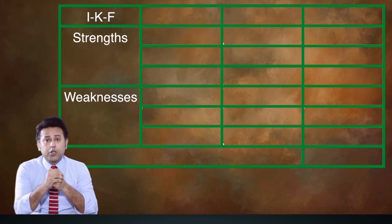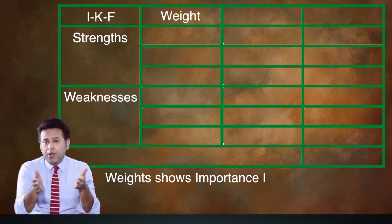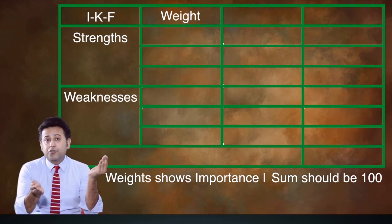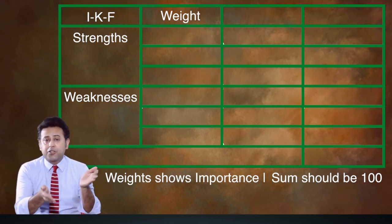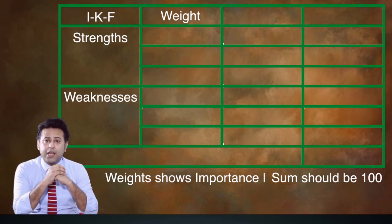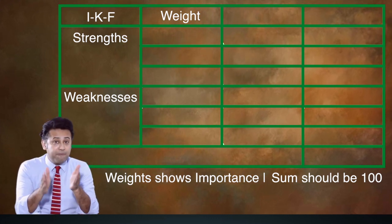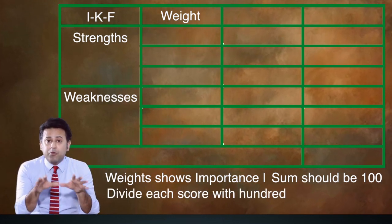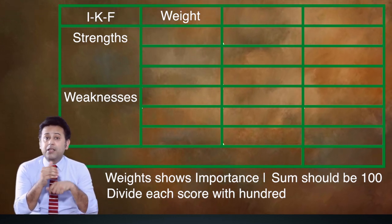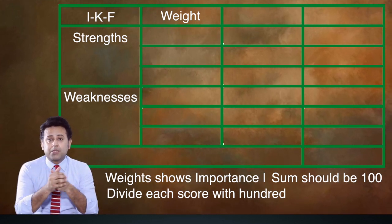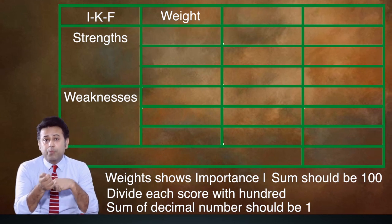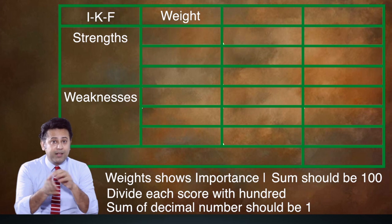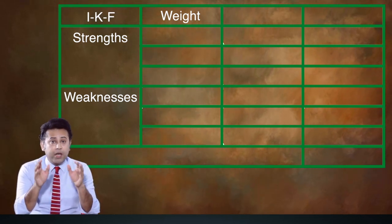The second column includes weight. Weight signifies importance. We assign each factor a weight, and the sum of all weights should equal 100 — we split the 100 score among all factors as per their importance. The more weight assigned to a factor, the more important that factor is considered. Once we assign weights from 1 to 100, we divide each assigned weight by 100 to come up with a decimal score. The total of all decimal scores should equal 1, confirming the arithmetic is correct. If the total does not reach 1, there is a problem that needs to be corrected.